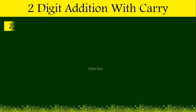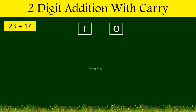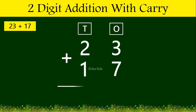Let's take an example. In the first number 23, 3 is on the ones position and 2 is on the tens position. Likewise, we should write the second number 17 exactly in the same order — that is, 7 on the ones position and 1 at the tens position.